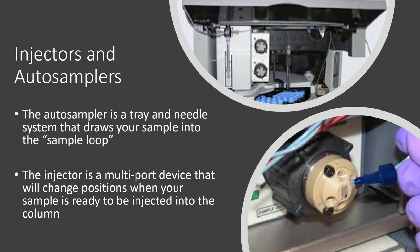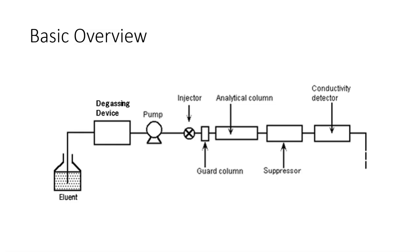The injector is a multi-port device that will change positions when your sample is ready to be injected into the column. Normally this injector is in a position where eluent can flow through it and straight into the column, but as soon as your sample is in the sample loop and ready to be injected, this port will open up for your sample to go into the column, inject the sample, and then it'll go right back to eluent so that eluent can continue flowing through the system.